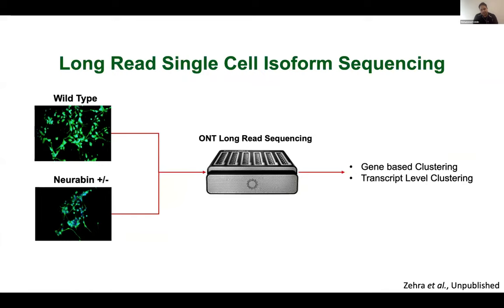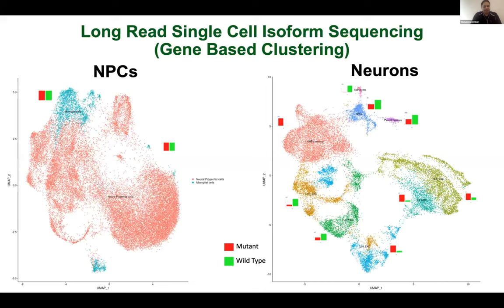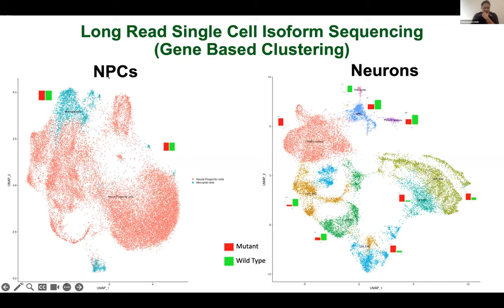Next, we took the wild type and neurobin heterozygous mutated lines and did long-read sequencing using single circuit. The isoform data gave very interesting results. We did both gene-based clustering and transcript-based analysis. In gene-based clustering, the NPCs — neural progenitor cells — were merged, with mutated and control data showing equal ratios of mutated and control cells.